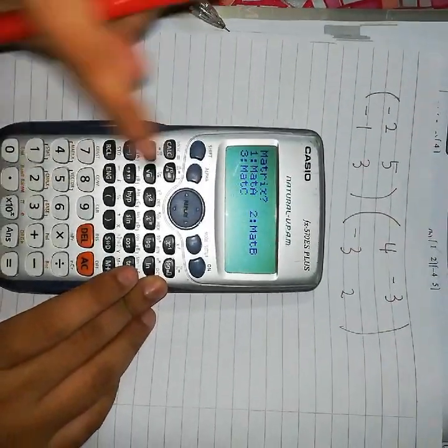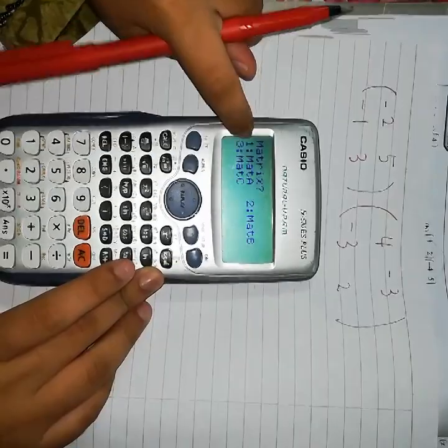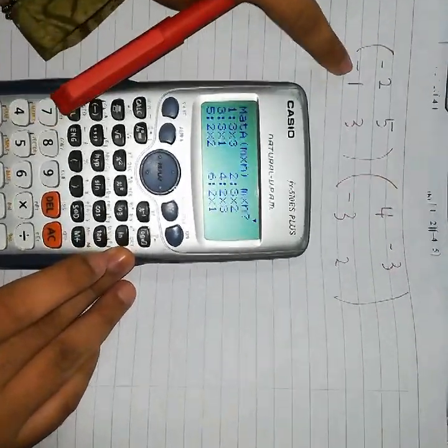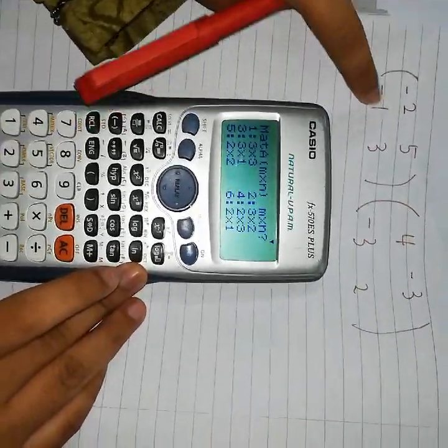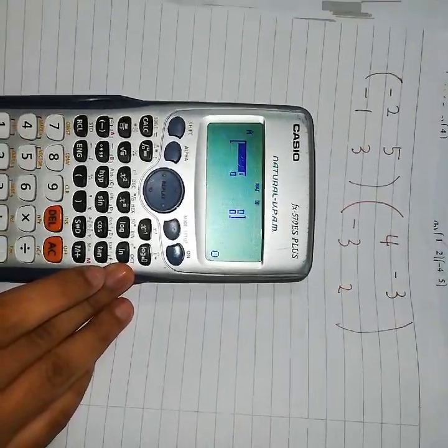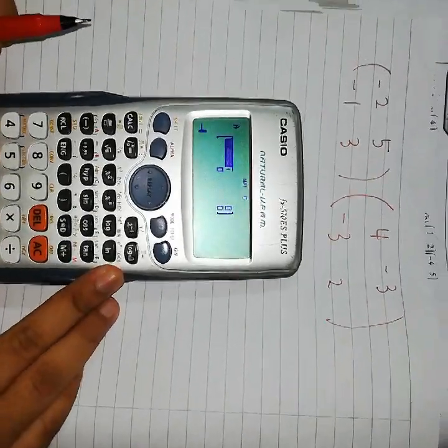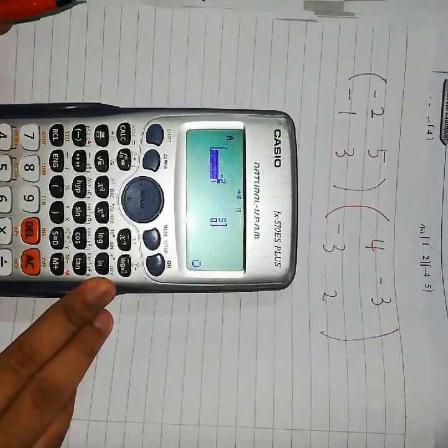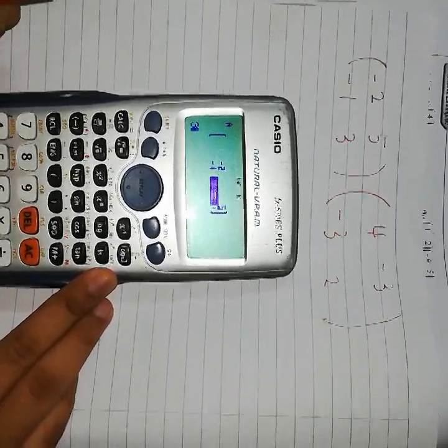Selepas tu, tekan nombor 1, mat A. Dan kita tengok dia punya lajur dan baris dia. Jadi sekarang ni lajur dan baris dia dua-dua. So, kita tekan nombor 5. Dan isikan di tempat kosong.